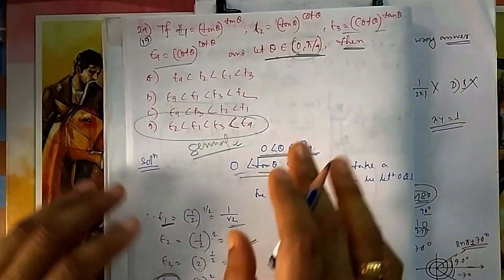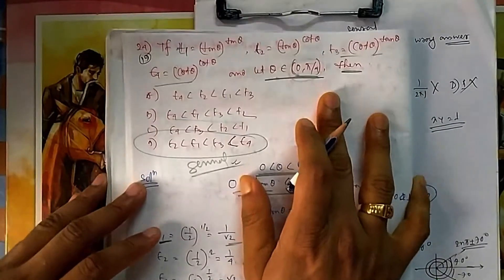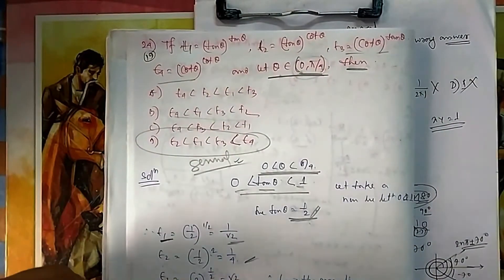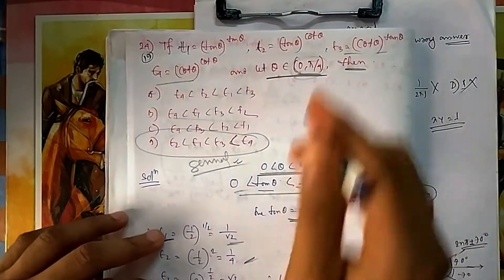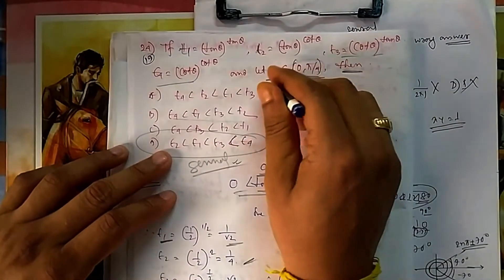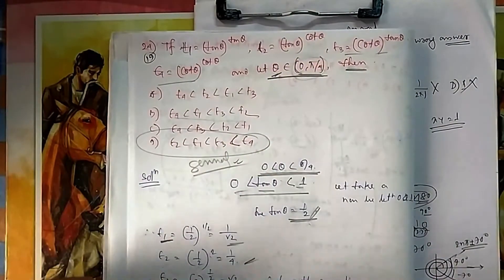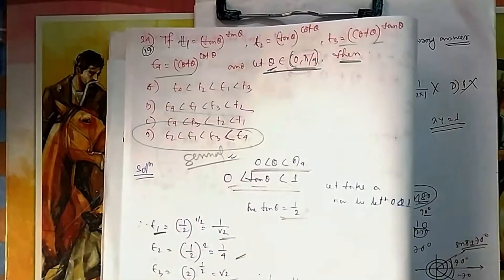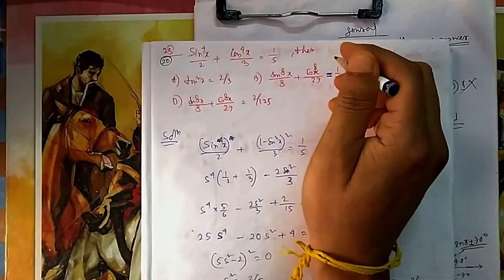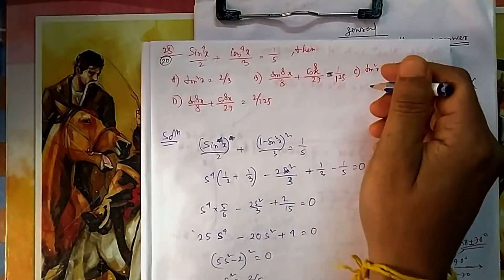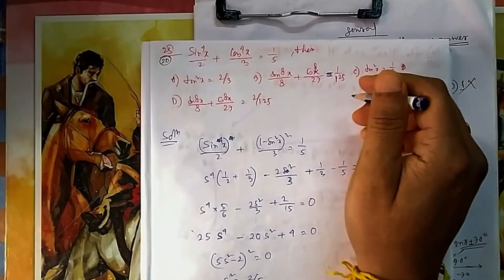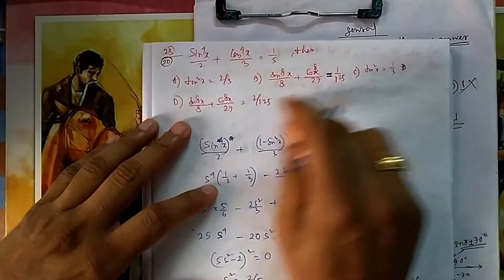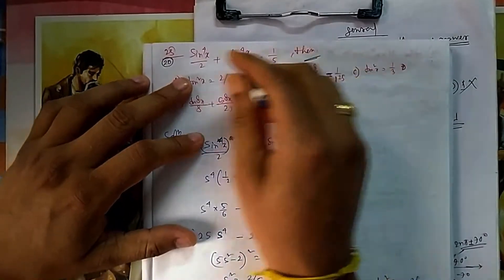These are known as general approach questions — you try with a convenient value of theta, see which inequality is satisfied, and identify the ordering. This is a multiple correct option question, so you have to check each option to determine which ones are correct.